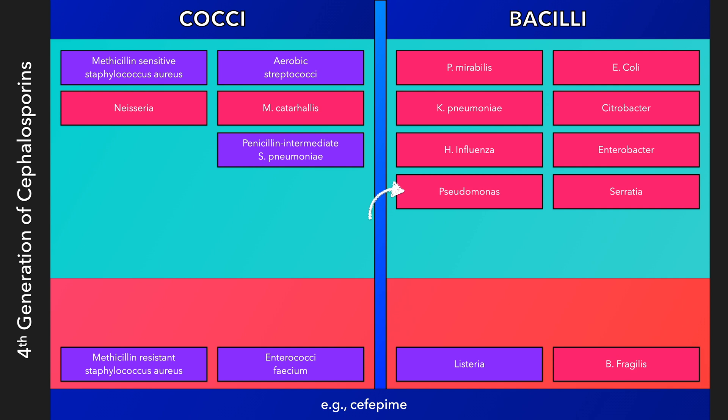The pseudomonal coverage is a defining feature of this generation. It is a very strong antibiotic with a wide spectrum of activity, usually reserved for in-hospital patients with severe infections when there is suspicion of a multi-drug-resistant organism. This antibiotic can also cross the blood-brain barrier and can be effective in the treatment of CNS infections.